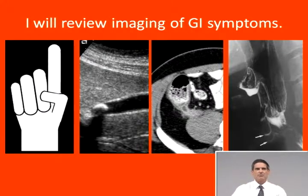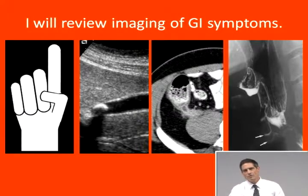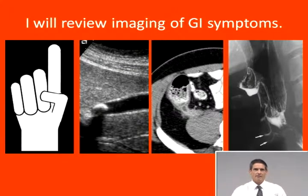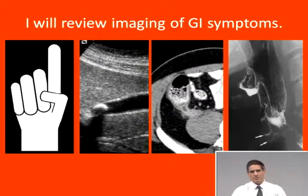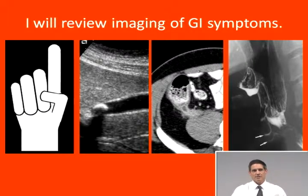Point two: ultrasound is the imaging study of choice for evaluating right upper quadrant pain and suspected acute pancreatitis. Ultrasound is the best way to determine if somebody has a diseased gallbladder or a dilated biliary tree. In pancreatitis, the study is done not so much to see the pancreas — though that may be useful — as to exclude a reversible cause for obstruction of the pancreatic duct. In other words, you're looking for gallstone pancreatitis.